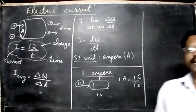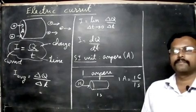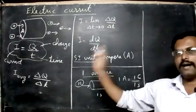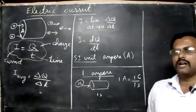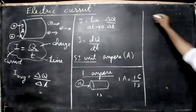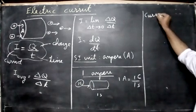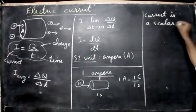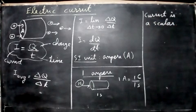Is electric current a scalar or a vector? Does it have direction? Yes. We say current has direction. Does it have magnitude? Yes. It has a number. But still we say electric current is a scalar we say. Current is a scalar.